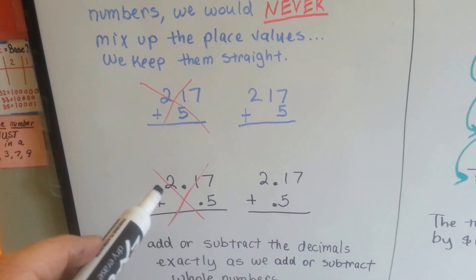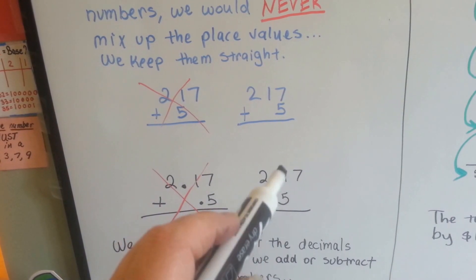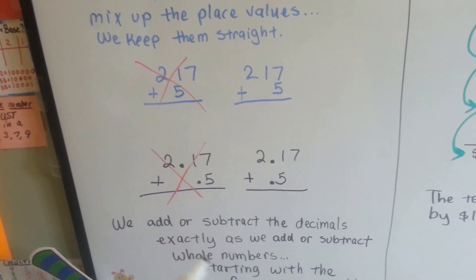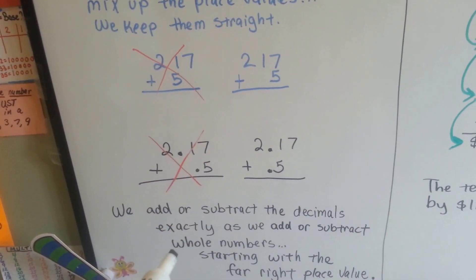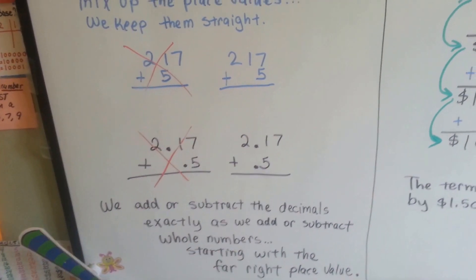So when we're adding decimals, we wouldn't put the tenths underneath the hundredths. We would put it under the tenths. We add and subtract the decimals just as we add and subtract whole numbers, and we start with the far right place value.